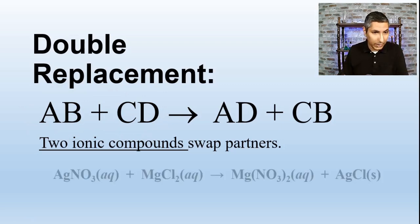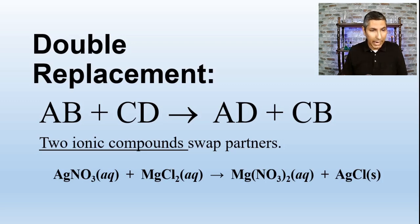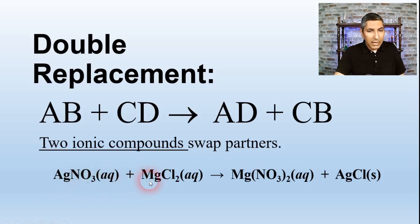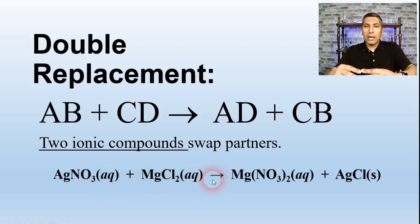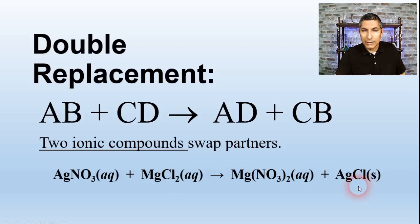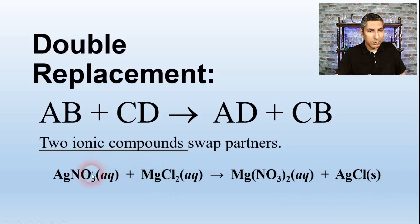Here's a good example of a double replacement reaction. We have silver nitrate, AgNO3, as a solution, and magnesium chloride, also aqueous. The two ions swap partners: silver (Ag) gets with chloride (Cl) to make silver chloride solid, and magnesium gets with nitrate ions to make magnesium nitrate. They've just swapped their partners around.